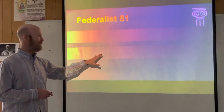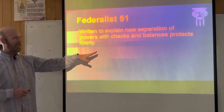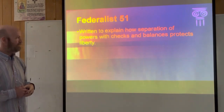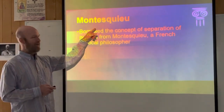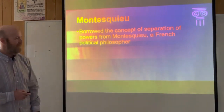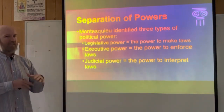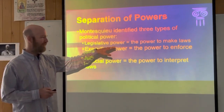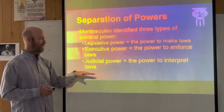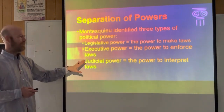Finally, Federalist Paper 51 was written to explain how separation of powers with checks and balances will protect the liberty of the American people. They borrowed a lot of ideas from Montesquieu, the French philosopher who wrote about separation of powers. According to Montesquieu, a good government will have three branches, each with divided powers: the legislative will make laws, the executive will enforce the laws, and the judicial will interpret the laws — the exact same system we have.